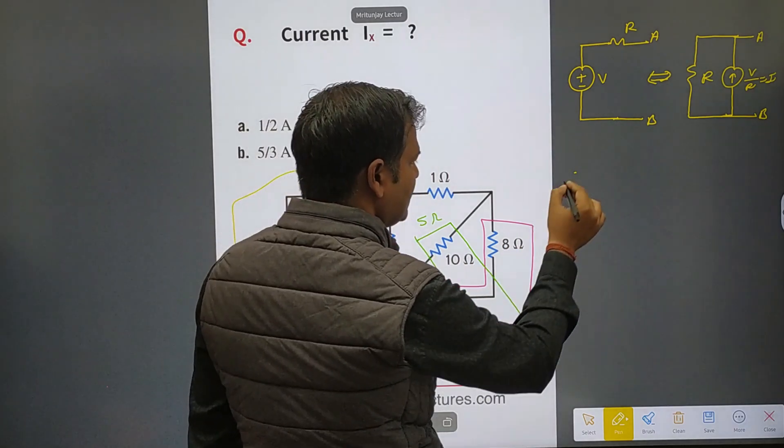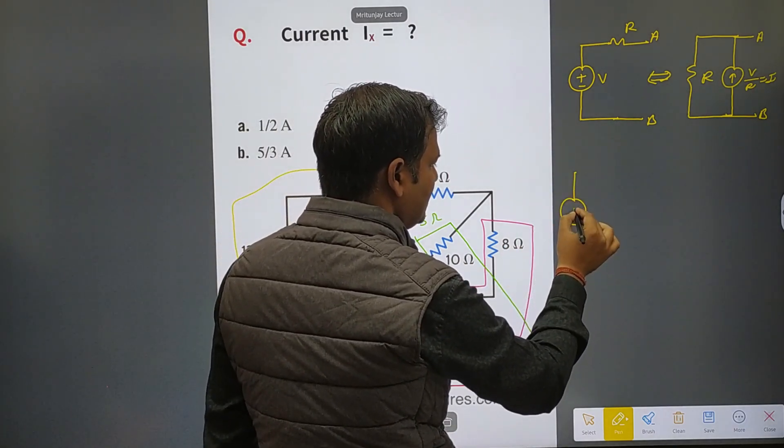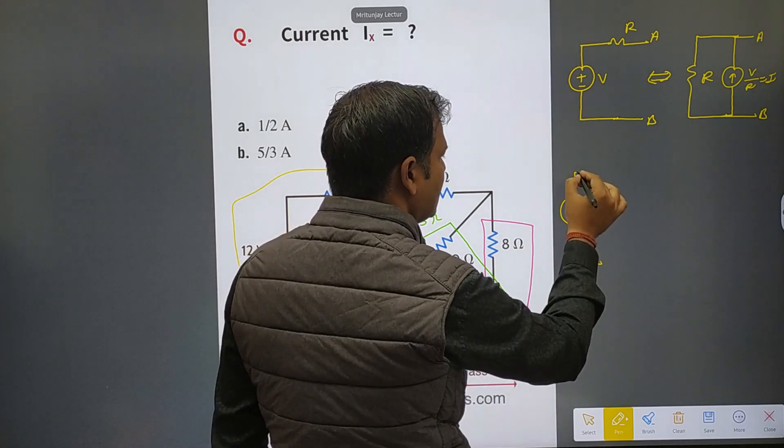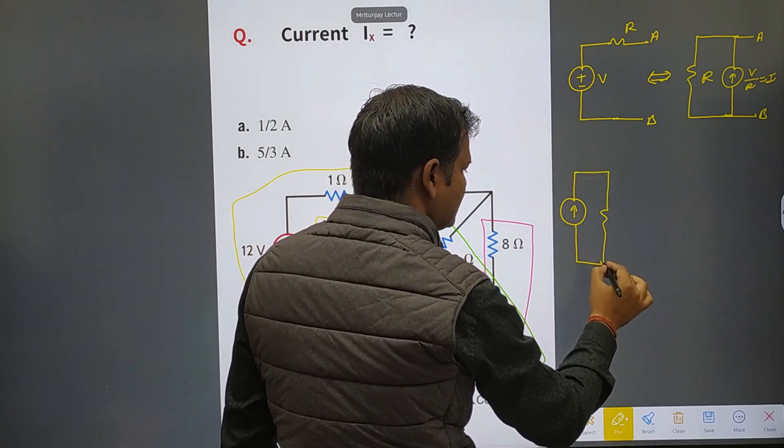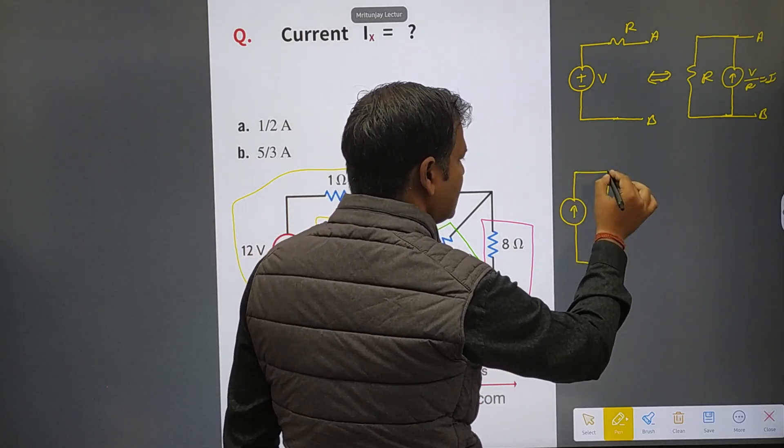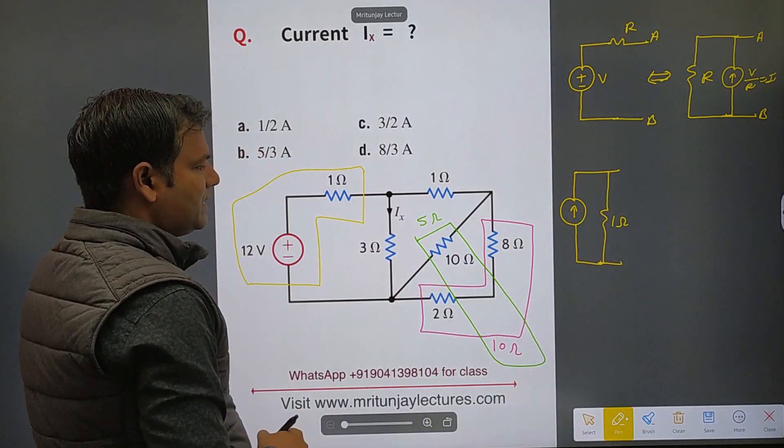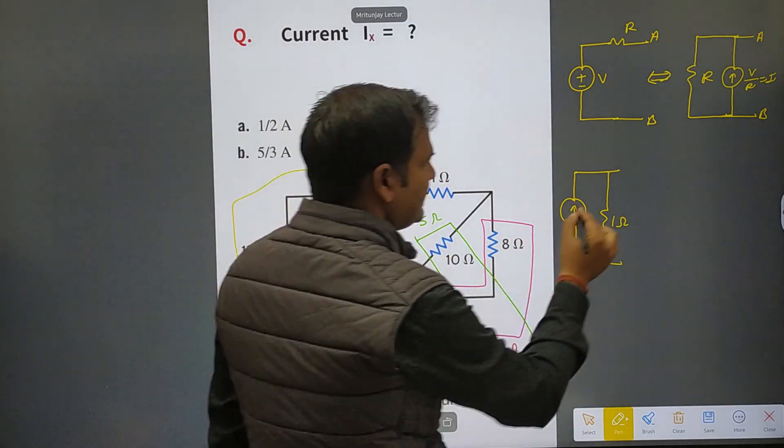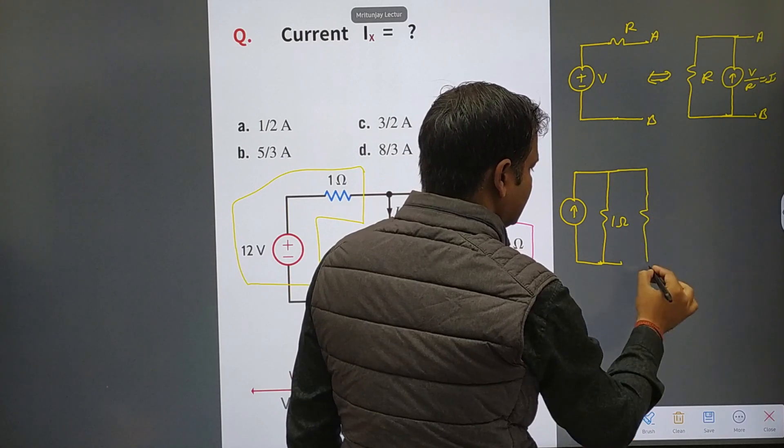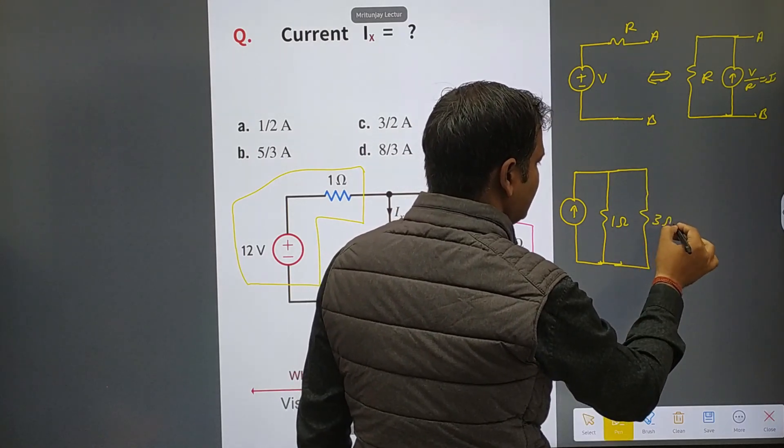So here 12 ampere, and what about resistance? That is 1 ohm. Clear or not? After that, that is 3 ohm, this one is gonna connect here, that is 3 ohm.